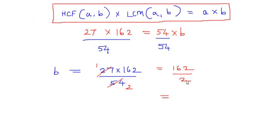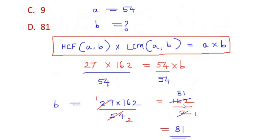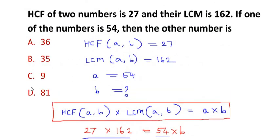So 2 one time is 2 and 2 eight times is 16, and 2 one time is 2. So 2 eighty-one times is 162. So the value of the second number is 81, so the option here is D.